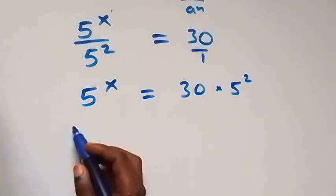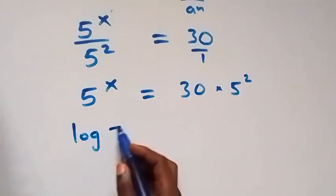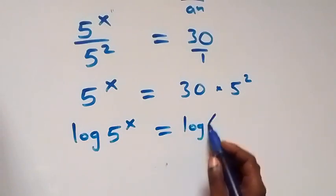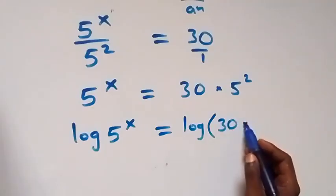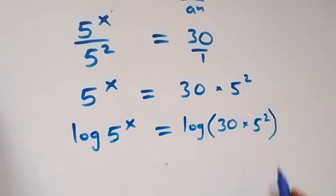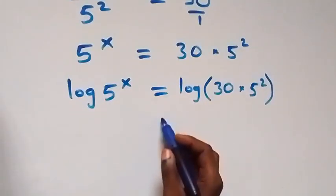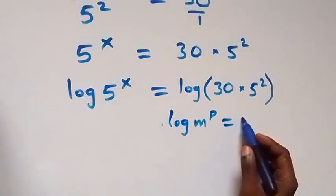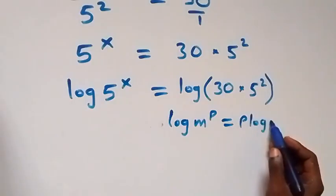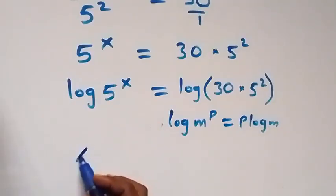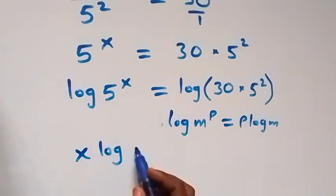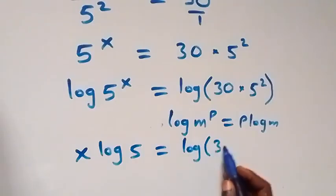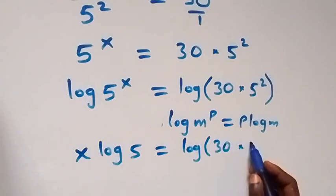Next step, we can take the log on both sides. That is, here we have log of 5 raised to power x, and on this side we have log of 30 times 5 squared. From the power rule of logarithms, log m raised to power p equals p log m, so this becomes x log 5 equals log of 30 times 5 squared.